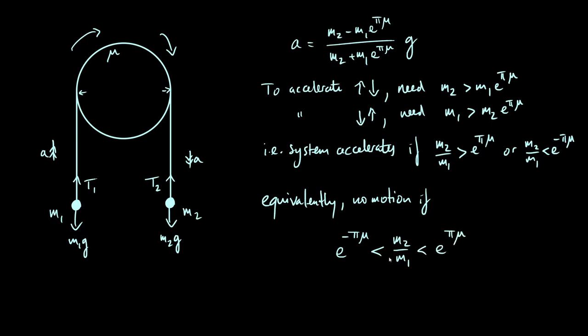In fact, these inequalities should really be less than or equal to. Because if the mass ratio m2 over m1 is exactly equal to e to the pi mu, or e to the minus pi mu, then what we would have is a case of limiting equilibrium. So that would be where the system is just on the point where it's about to move, but we haven't quite pushed it over the edge yet.